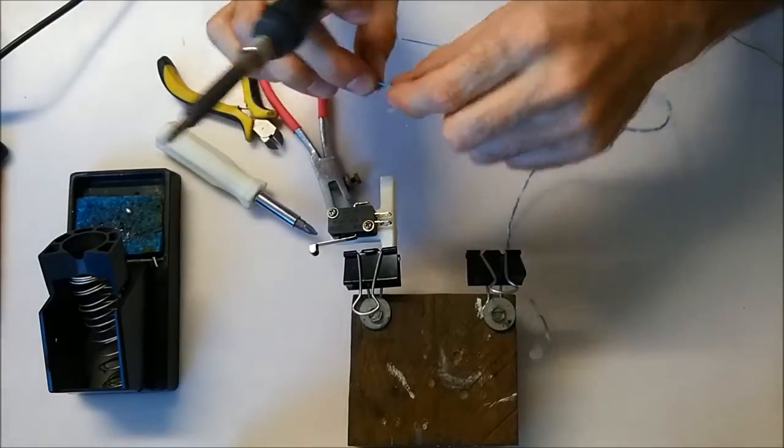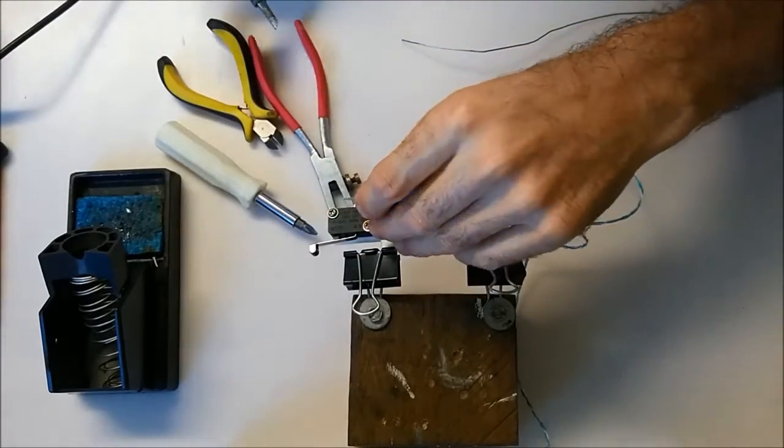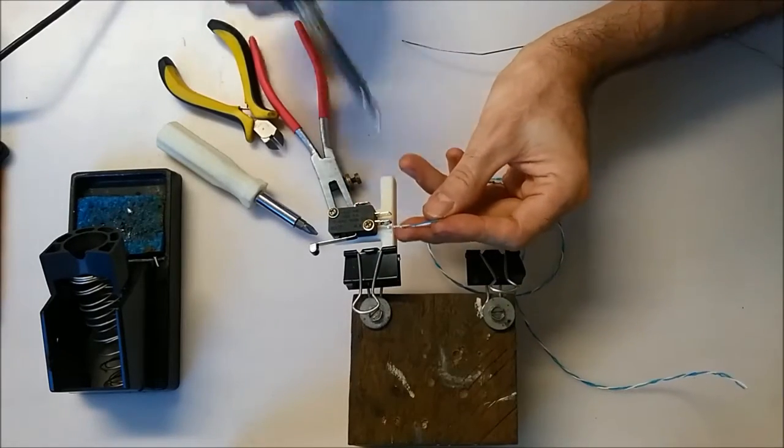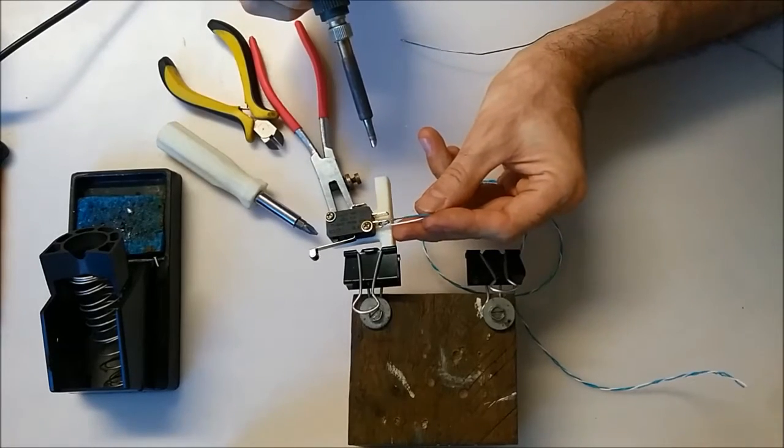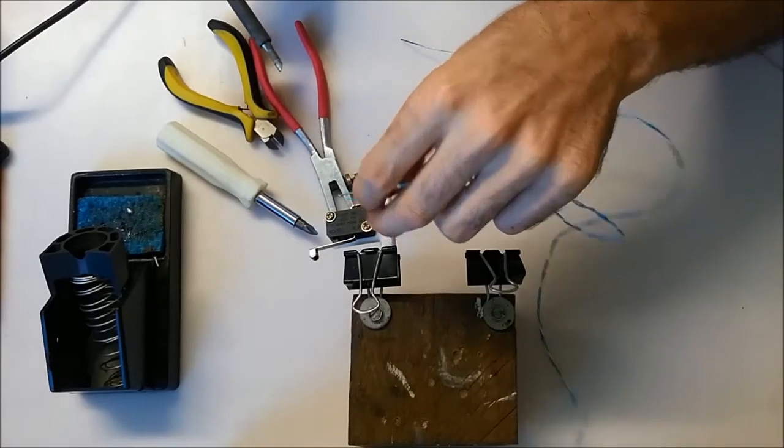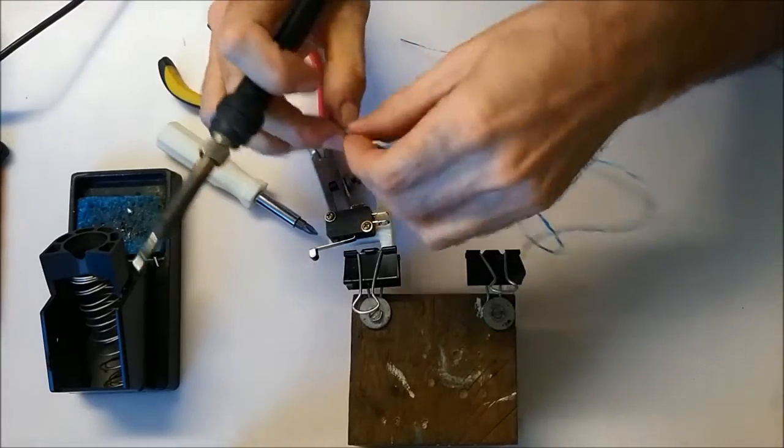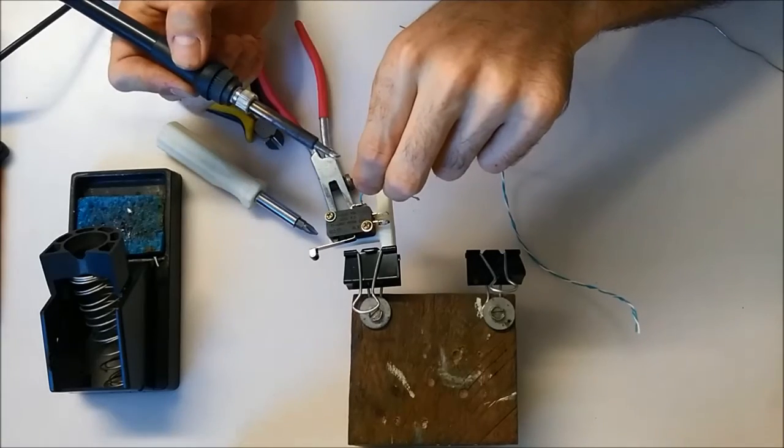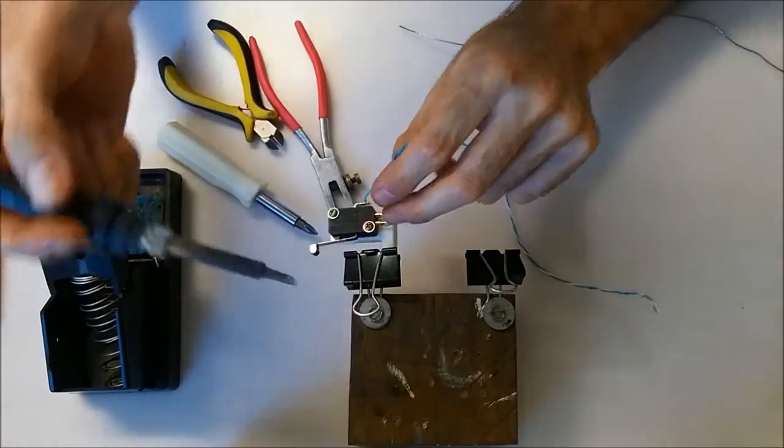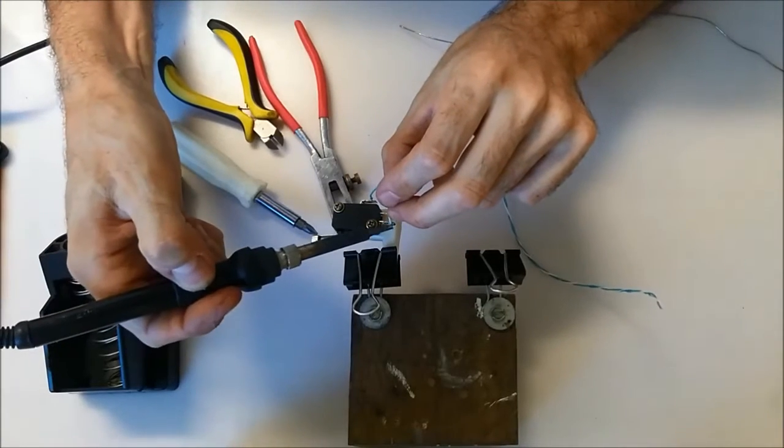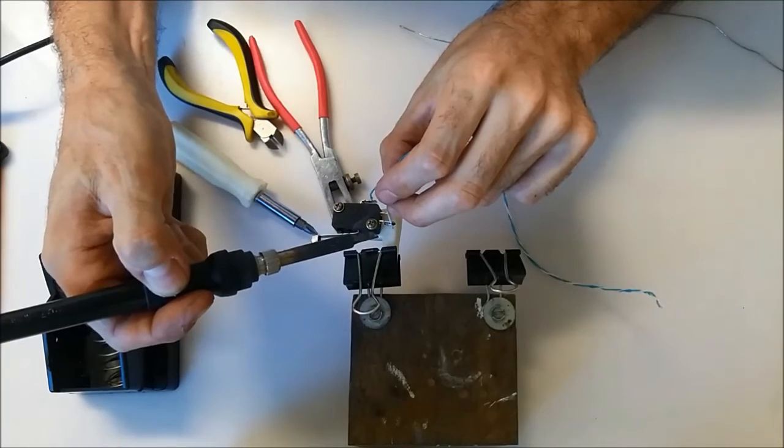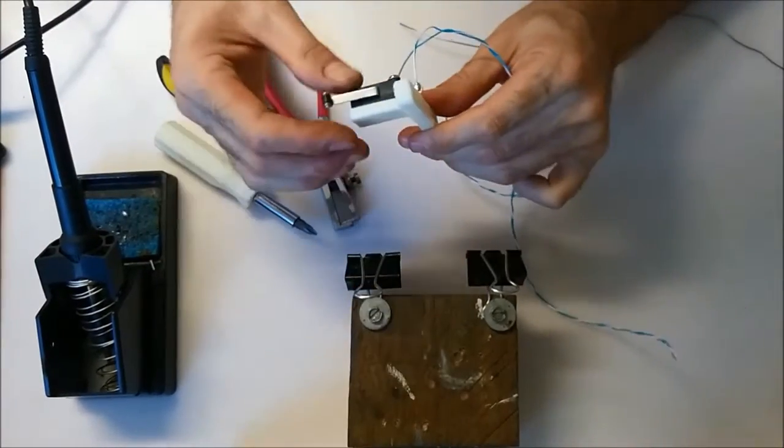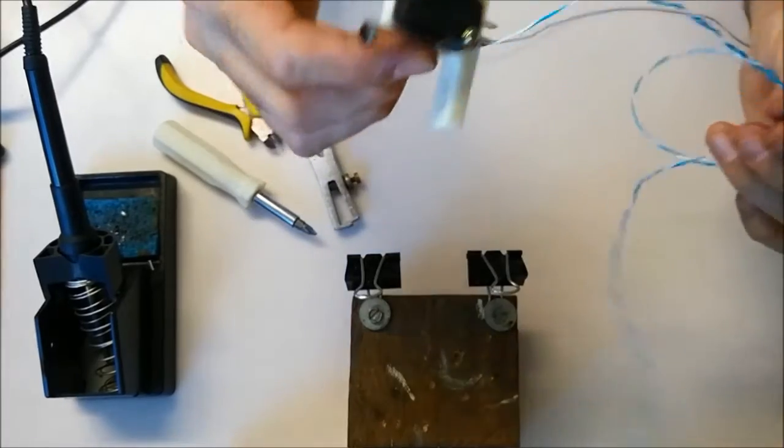And orientation doesn't matter. And I usually have the wires coming straight out, but not underneath. Because the bed is here, so you obviously can't put the wire that way. So put the wire coming out at right angles. So that's ready to mount on the printer.